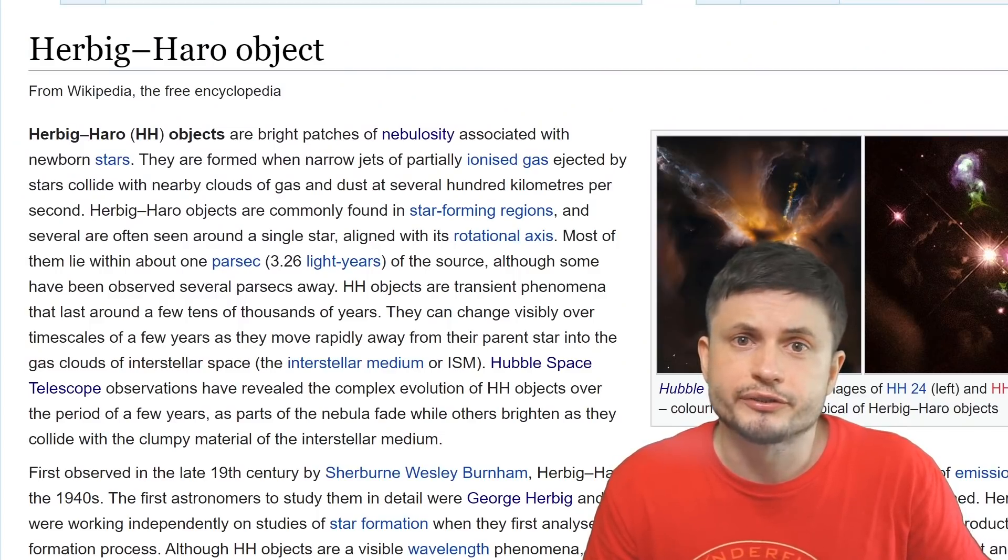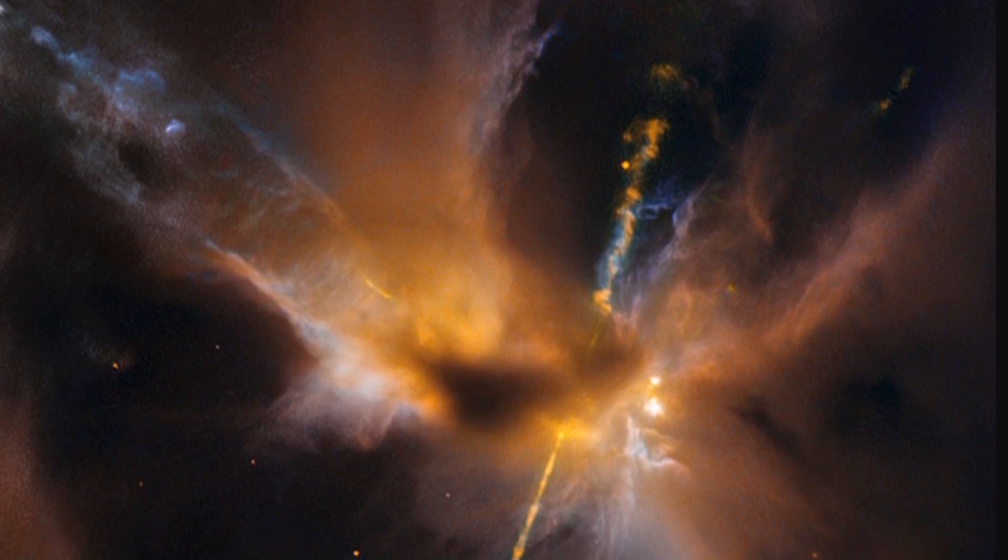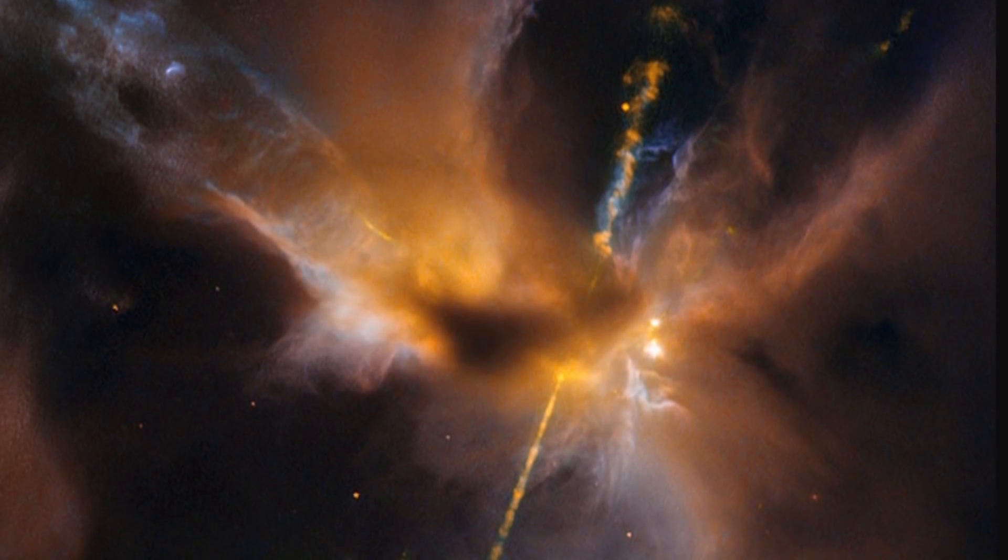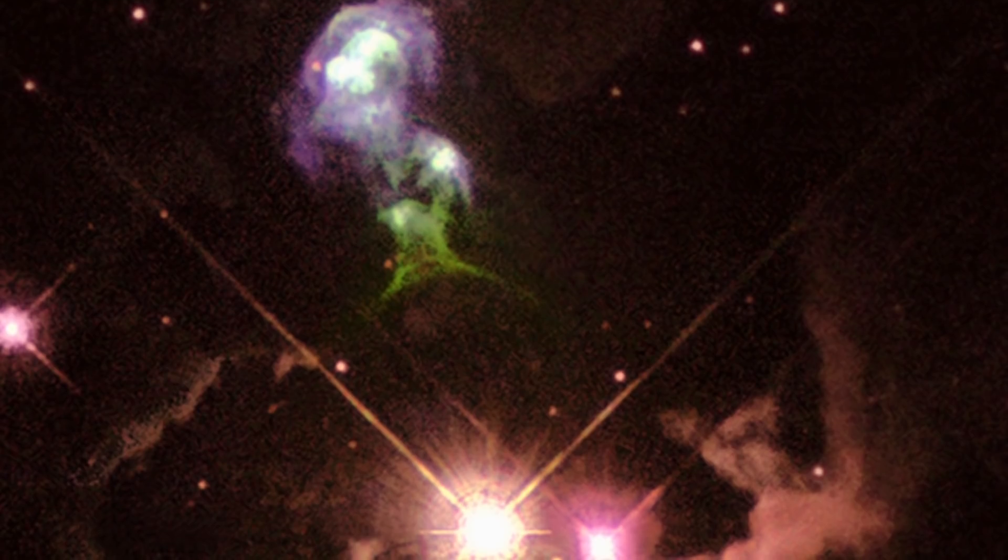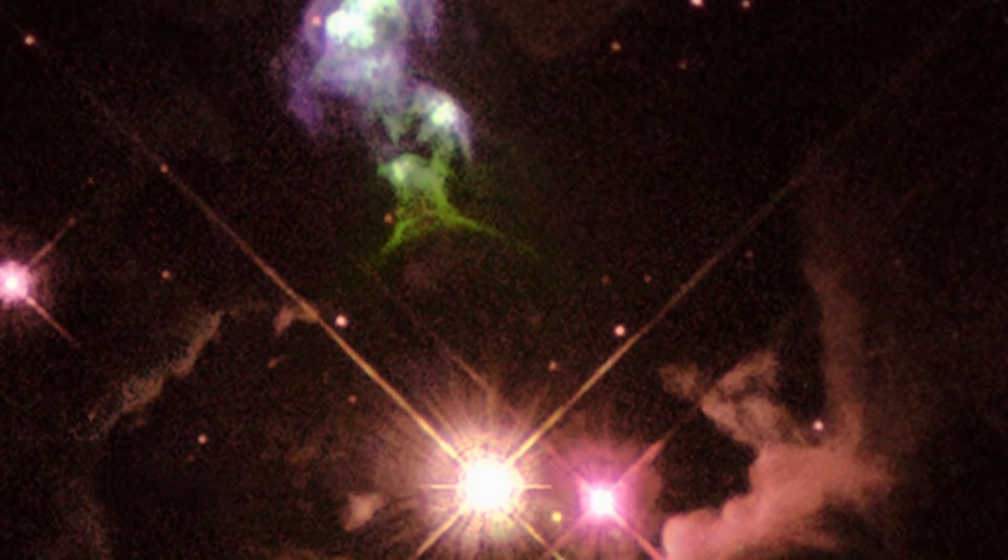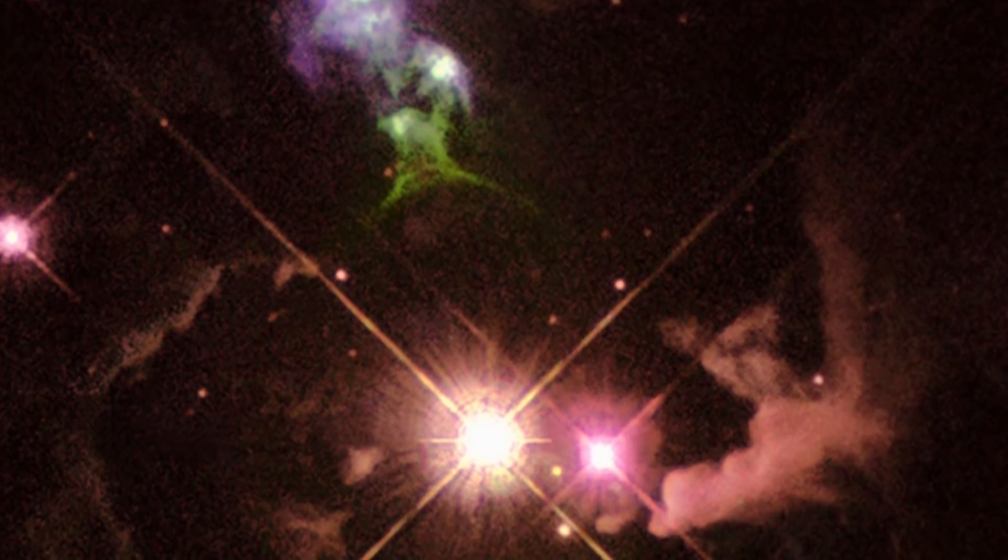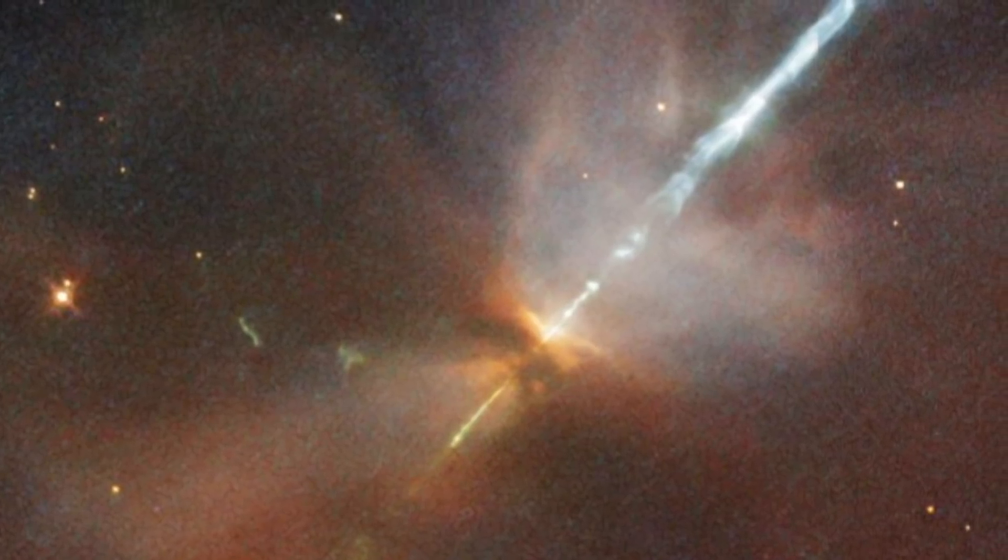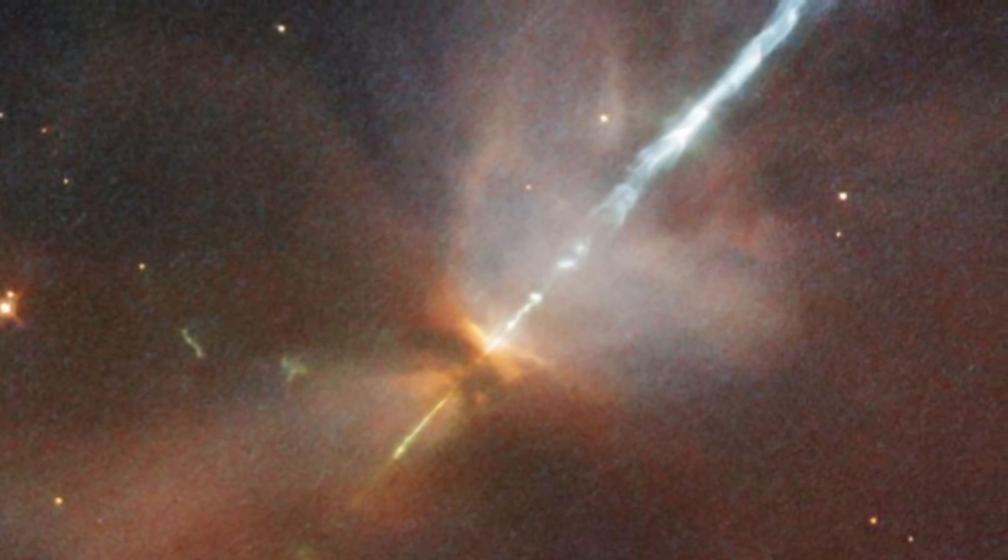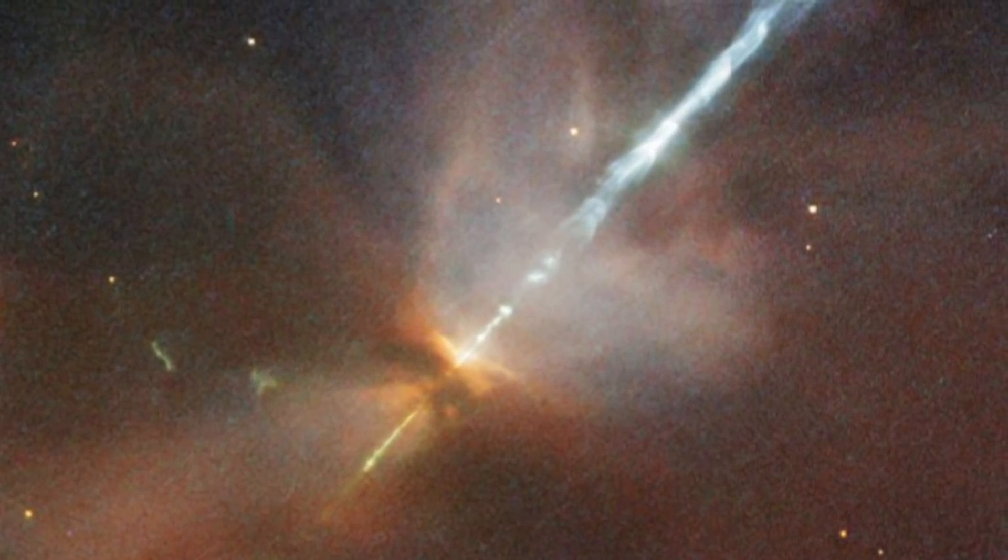A type of object referred to as the Herbig-Haro Object or HH for short. And these Herbig-Haro Objects are honestly some of the most beautiful creations in the universe. Something that in some cases you can even see with your own telescope because a lot of them are visible in optical light. But very recently the Hubble telescope was able to take this beautiful image of an object known as HH-111 which is one of the most impressive images of these objects ever taken.